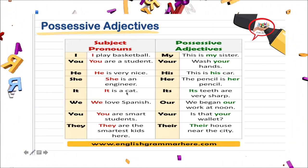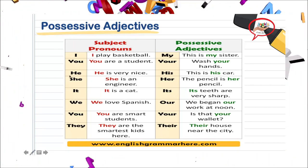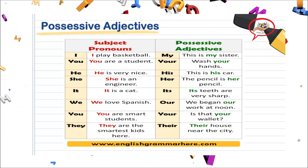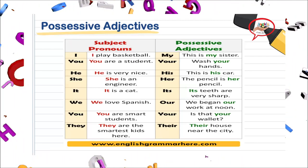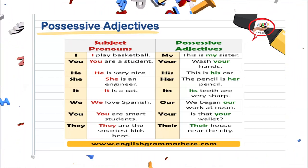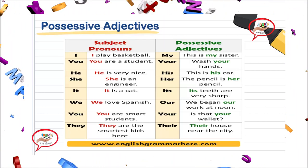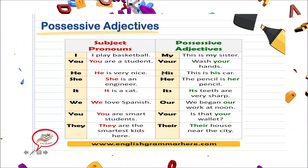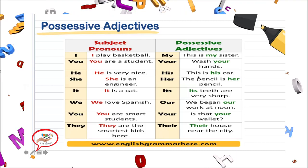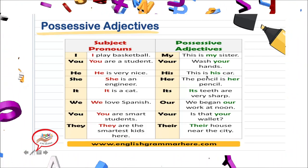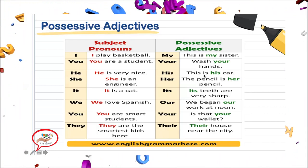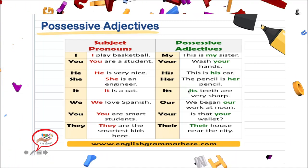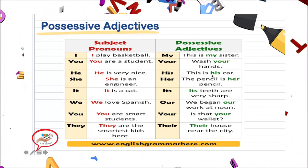Next one. Nuestro subject pronoun es he, entonces ¿cómo va a ser mi possessive adjective? Para referirme a he, para referirme a Carlos, Abraham, Gerardo, etcétera, vamos a utilizar lo que es el possessive adjective his. This is his car. Este es su carro. His hace referencia a su.